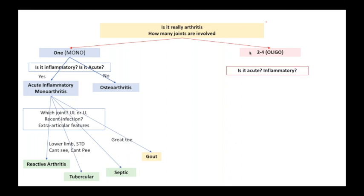If you have an oligoarthritis, you again ask the same question. Is it acute? Is it inflammatory? If you get the answer yes, you are dealing with an acute inflammatory oligoarthritis. You ask the questions, is it symmetric? What is the distribution? Is it preferentially involving the upper limb or the lower limb? What are the extra-articular features?